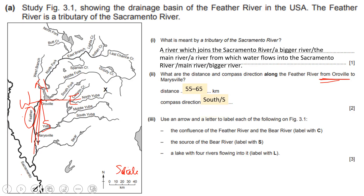Use an arrow and a letter to label each of the following on figure 3.1. First, the confluence of the Feather River and the Bear River. Confluence is where two rivers meet — use letter C. So this point where the Feather River and Bear River meet is the confluence.